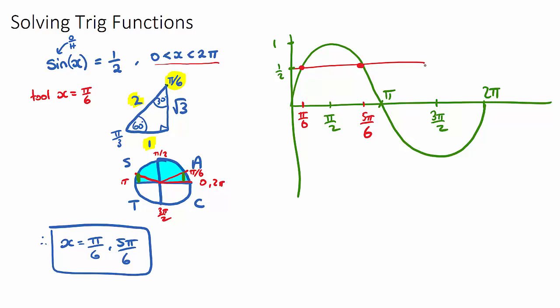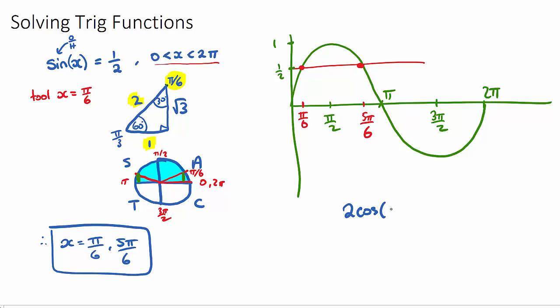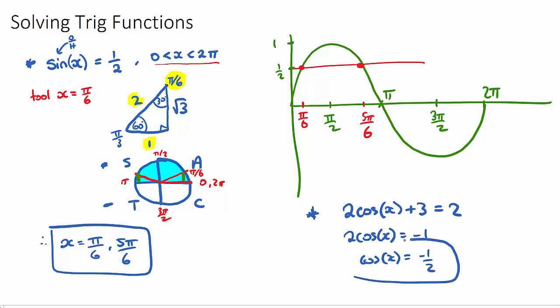That's an example of solving a trig function. Your questions probably won't be as simple as just sine of x equals a half — they might give you a trickier equation to begin with. An example might be 2 cos x + 3 = 2. All they want you to do is rearrange to get some trig ratio. In this example, we'd subtract 3 from 2: 2 cos x = −1, so cos x = −1/2. We'd look at which angle where cos is a positive 1/2, which would be 60 degrees, then consider the negative and look at the two negative cos quadrants, doing the same process as before.